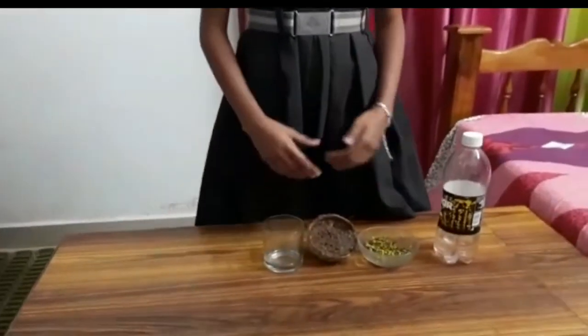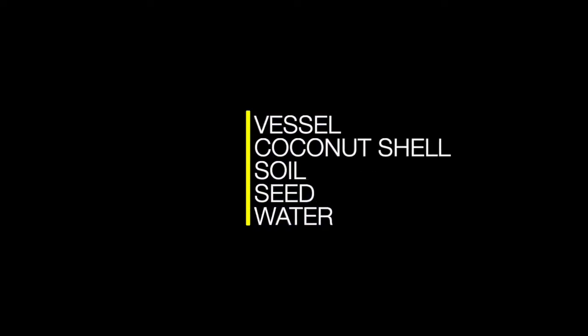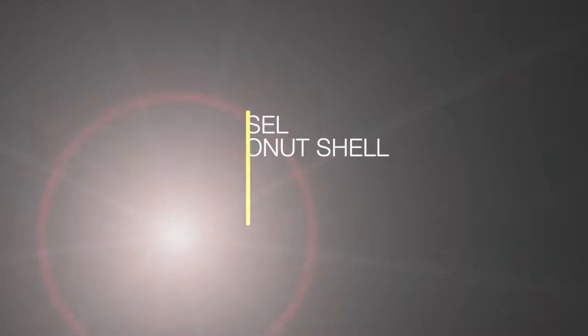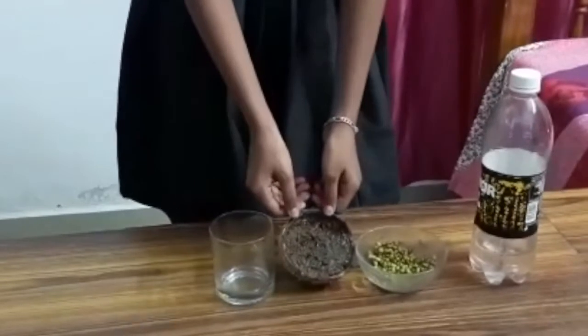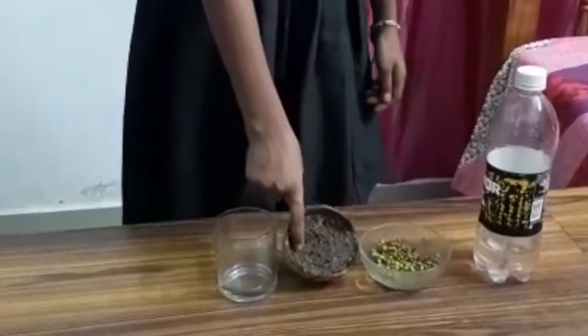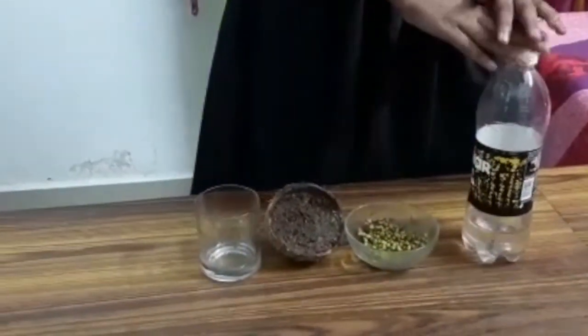The materials required are a vessel, a coconut shell, soil, seeds, and water.